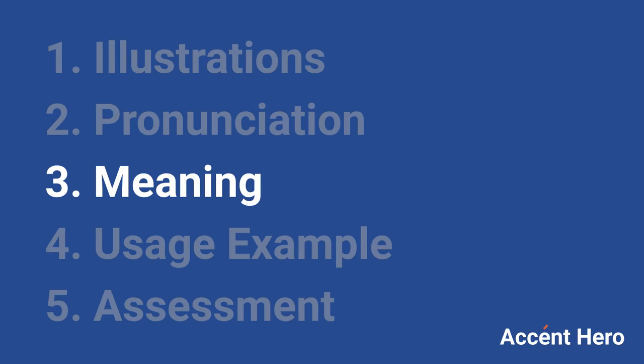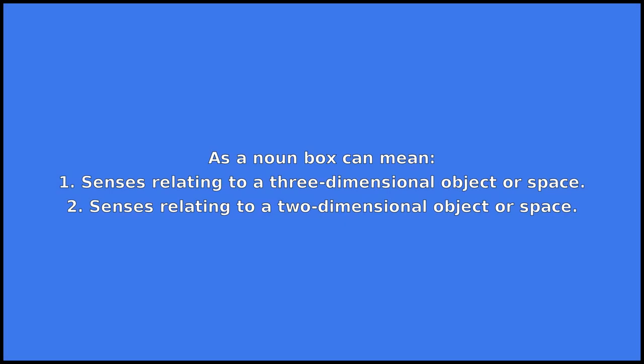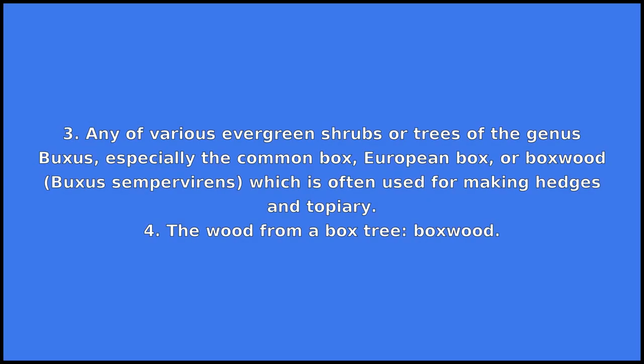Box can be a noun, a verb, or a name. As a noun, box can mean: 1. senses relating to a three-dimensional object or space; 2. senses relating to a two-dimensional object or space; 3. any of various evergreen shrubs or trees of the genus Buxus, especially the common box, European box, or boxwood, Buxus sempervirens, which is often used for making hedges and topiary.